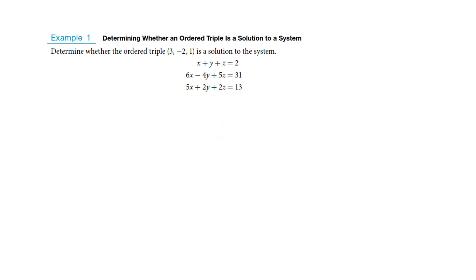We're going to try to eliminate one of the variables from two equations so that we return to having two equations with two variables, just like we did last time. The first question to answer is: is this point a solution to the system? If that were true, you could plug in — now this is an X, Y, and Z point this time. So just like we normally have an X, Y point, now it's X, Y, and Z. We're going to plug those values into each of the equations.